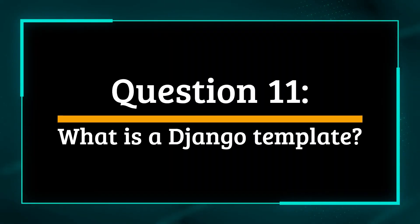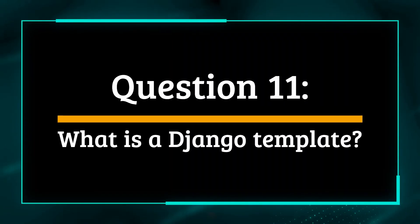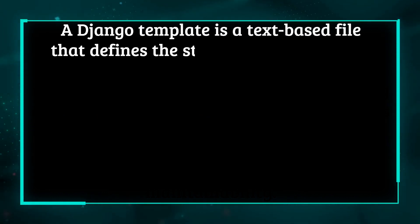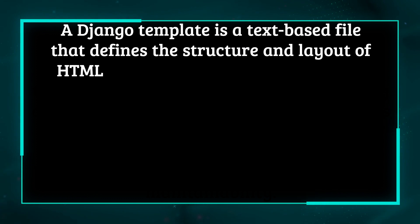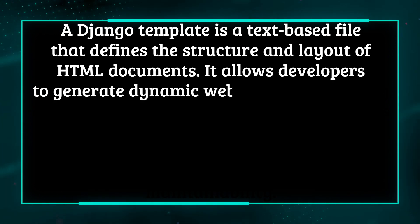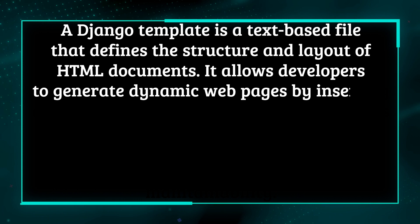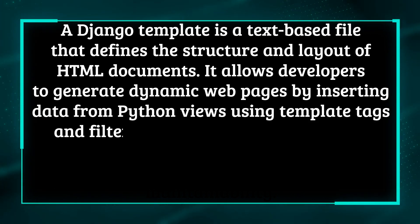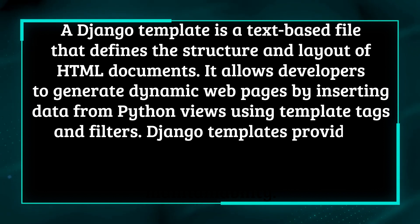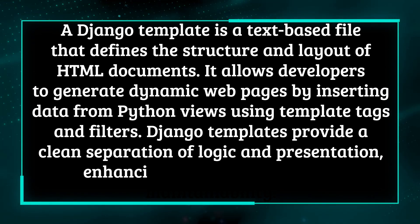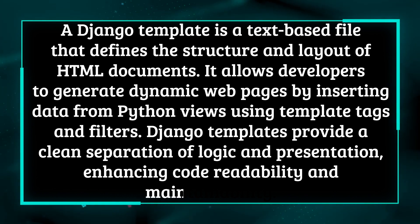Question 11: What is a Django template? A Django template is a text-based file that defines the structure and layout of HTML documents. It allows developers to generate dynamic web pages by inserting data from Python views using template tags and filters. Django templates provide a clean separation of logic and presentation, enhancing code readability and maintainability.